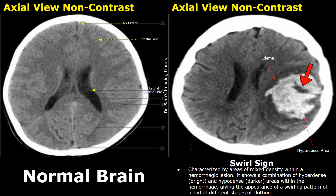If a hematoma is large enough, it can cause mass effect, which is the compression and distortion of nearby brain structures such as the ventricles. Here you can see the ventricle is compressed because of the hemorrhage, which is a sign of increased intracranial pressure.